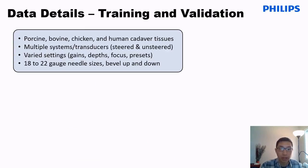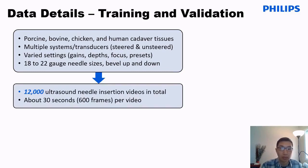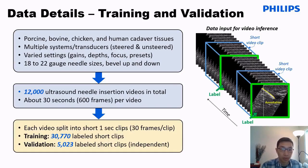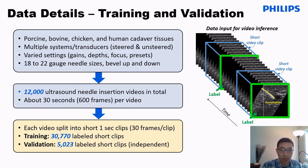A brief note on the data used for this study: we built up a dataset of a variety of ex vivo tissues, including multiple transducer types, imaging settings, needle sizes, and bevel orientations. This resulted in about 12,000 needle insertion sequences in total, which were then divided into multiple shorter one-second clips. These were then labeled with annotated bounding boxes and split into about 30,000 short clips for training and about 5,000 independent holdout clips for validation.